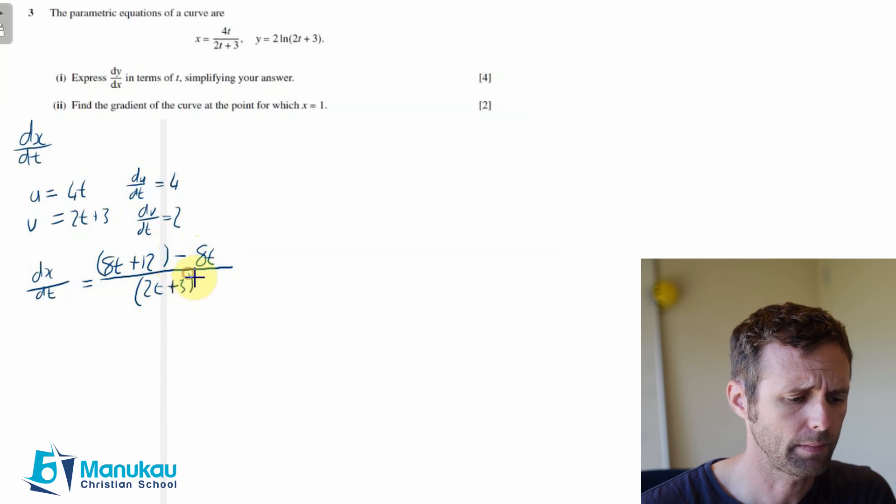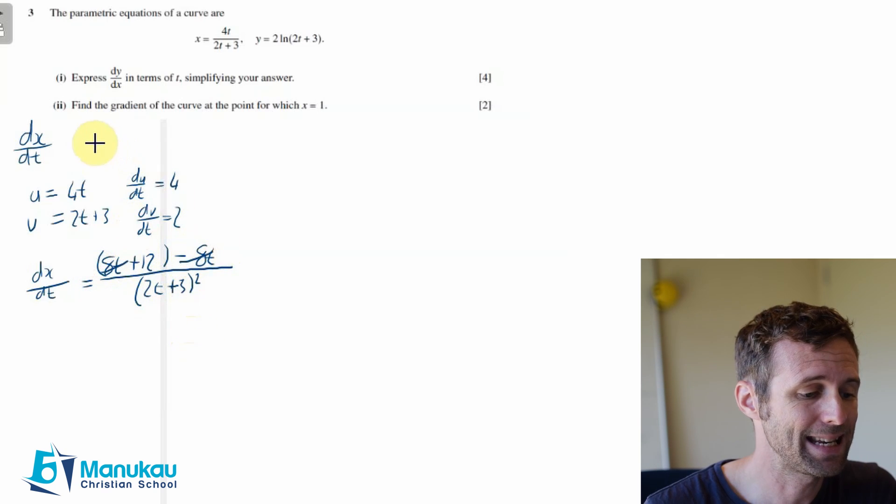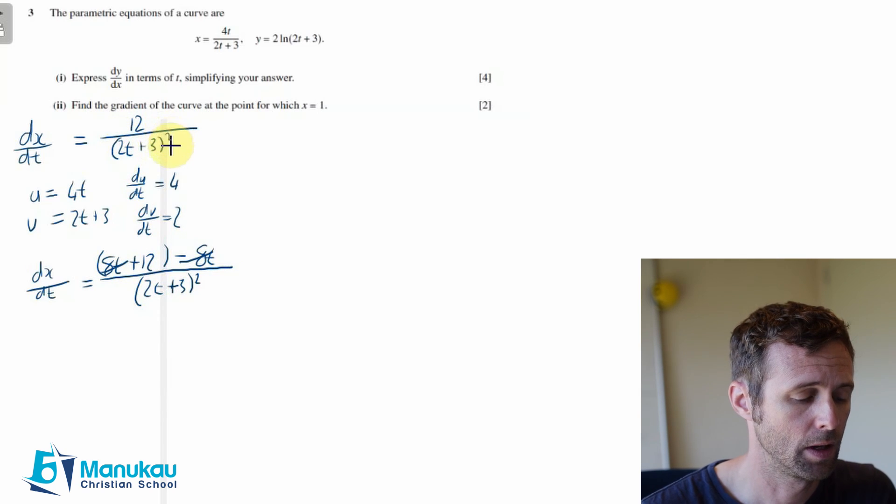You can see hopefully that the top line will simply be 12. So I can simplify dx/dt to 12 over (2t plus 3) squared. That's our first step.